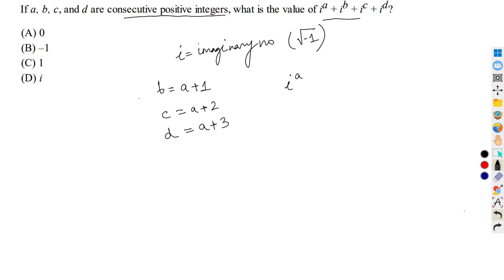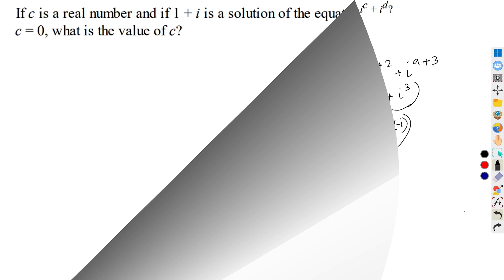Therefore this expression can be written as 1 plus i plus i squared plus i cubed. Now simplifying, we have 1 plus i, and we know i squared equals minus 1 and i cubed equals minus i. Therefore, simplifying we obtain zero. The answer is zero, option A.